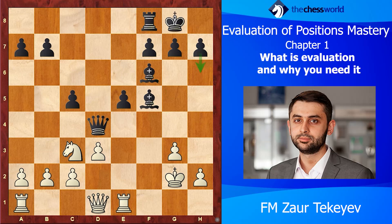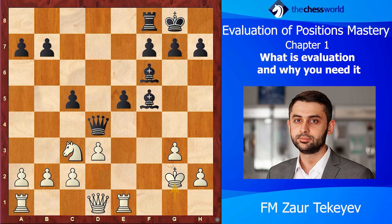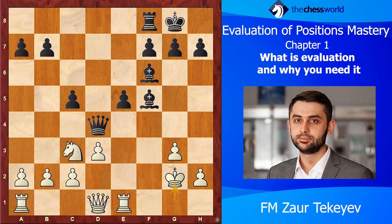A move like h6 is very weird here. White will simply play Queen f3 attacking the bishop, the b7 pawn is hanging, and the knight comes to e4, so h6 is not the best idea. Two of my students both mentioned the move e4, which comes to mind as opening the game for the bishops. But the issue with e4 — and also with Rook e8 to prepare e4 — is that before suggesting moves, you really should evaluate the position.